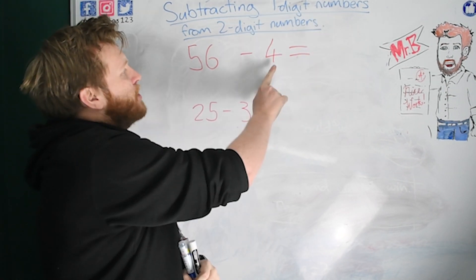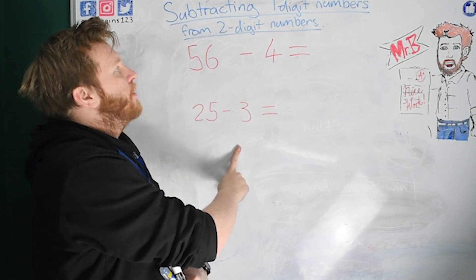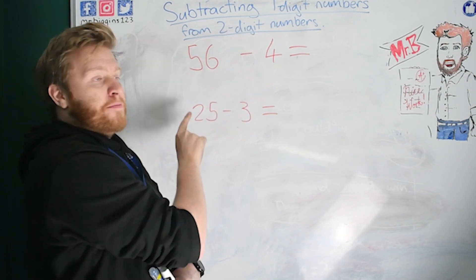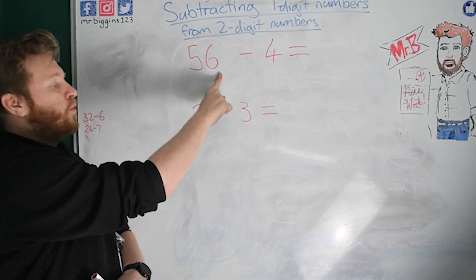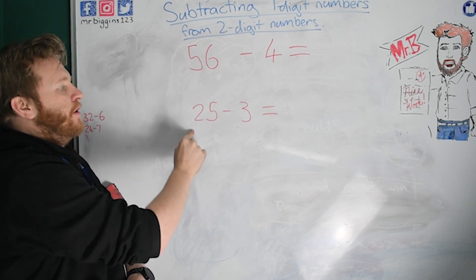Now one-digit numbers are numbers like this that only have one numeral, one number in them. And we are going to be taking them away from two-digit numbers, so numbers that have tens and ones, tens and ones. So they have two numerals in them.